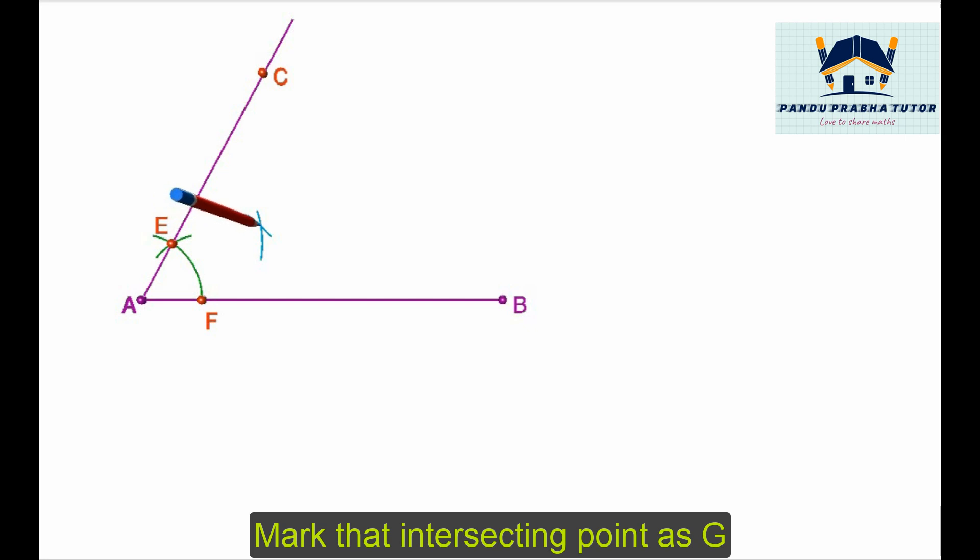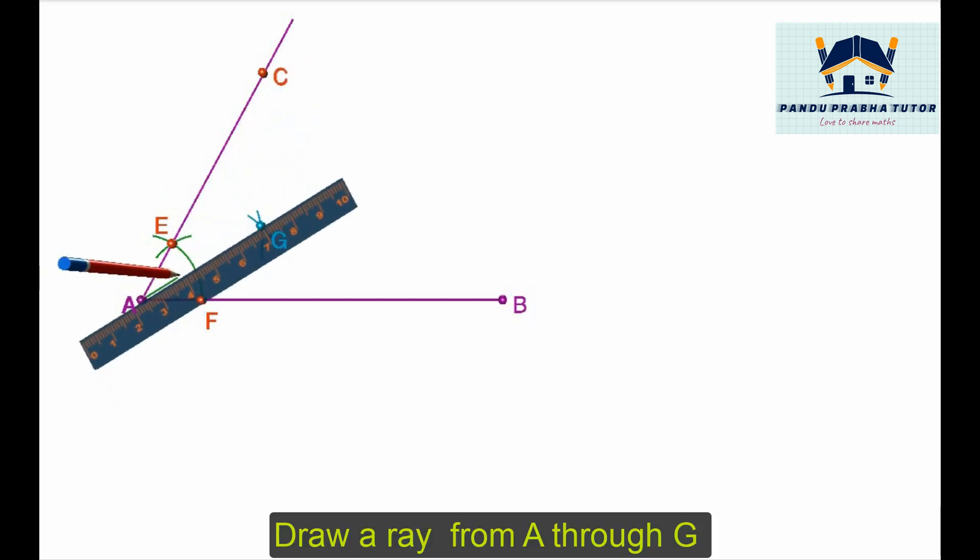Now mark the intersecting point as G. Draw a ray from A passing through G.